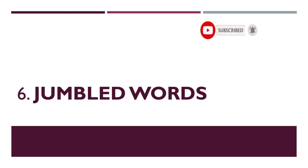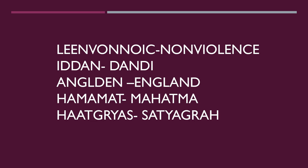The last activity is a jumbled words competition, which is good for small kids. We can jumble words related to Mahatma Gandhi — for example, non-violence, Dandi, England, Mahatma, and Satyagraha are all jumbled, and kids can guess the correct answer. You can divide kids into groups and they can give the correct answers to the jumbled words.